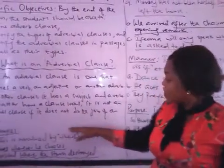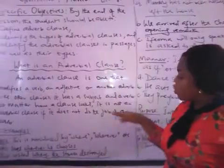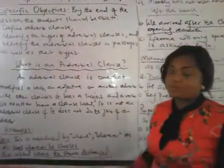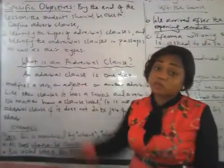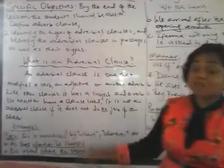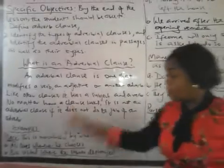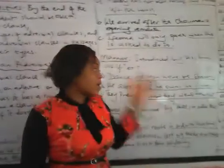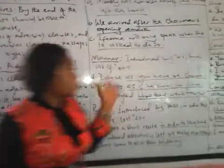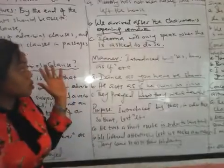Moving from there, we go into the types of adverbial clauses. We have — same as we have the types of single adverbs — we have place, we have time, we have manner, we have purpose, reason, condition, and concession.